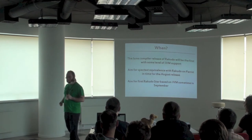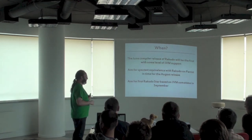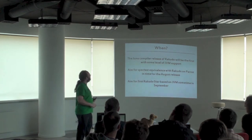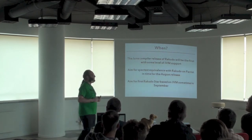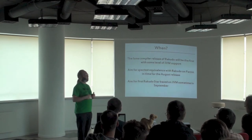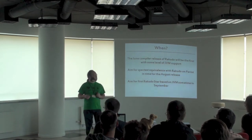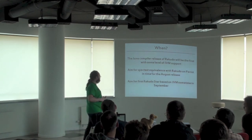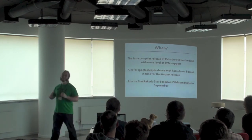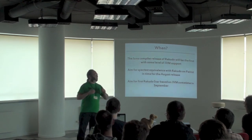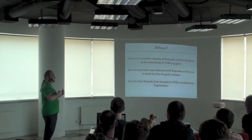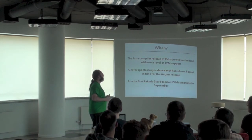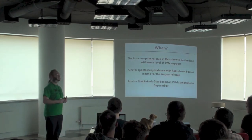When? The June release of Rakudo will be the first one to ship with some level of JVM support. My aim is that around the August release, we should be doing pretty much all the spec tests. Beyond that, I hope we'll be working towards the ecosystem — my aim is that Rakudo Star, the distribution release which includes a bunch of modules and the debugger, would be around September. One of the nice things about the debugger is that it's written in NQP and Perl6, which means it should just work on the JVM without any extra work.